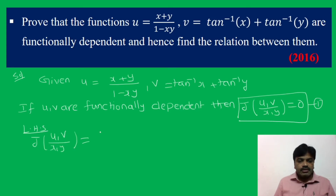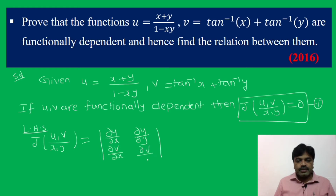The Jacobian definition is the 2×2 determinant: [∂u/∂x, ∂u/∂y; ∂v/∂x, ∂v/∂y]. This is the definition.